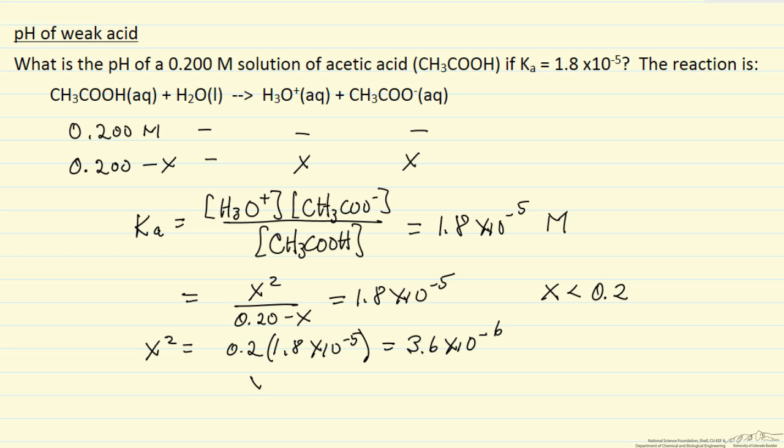And so therefore x is equal to 1.90 times 10 to the minus 3. And we can see it's a good assumption that x is only about 1% of 0.2. And so therefore the H3O concentration is 1.9 times 10 to the minus 3.